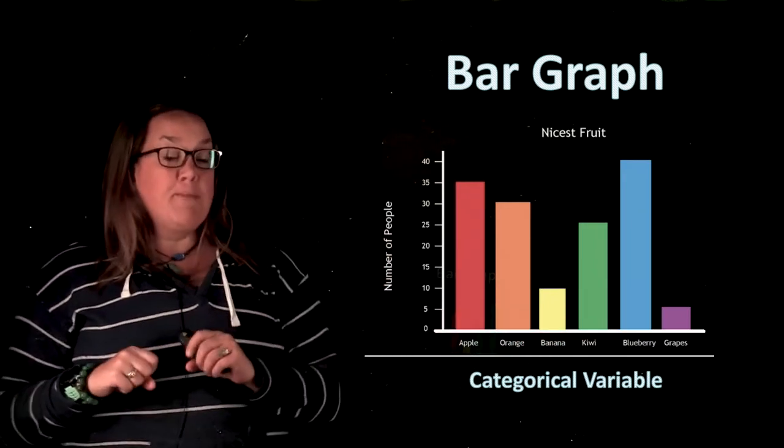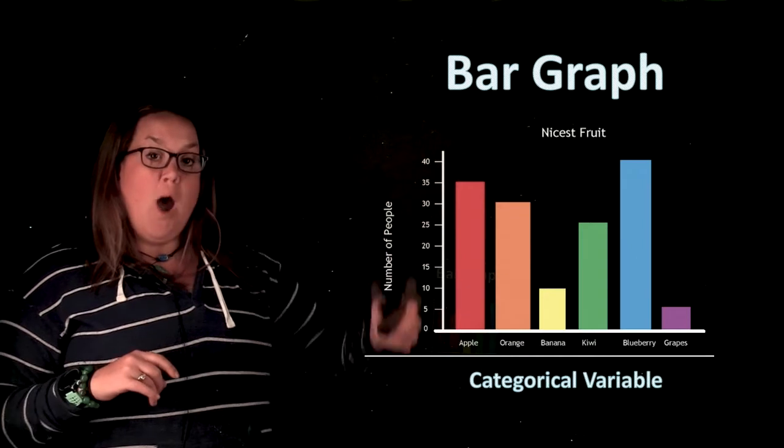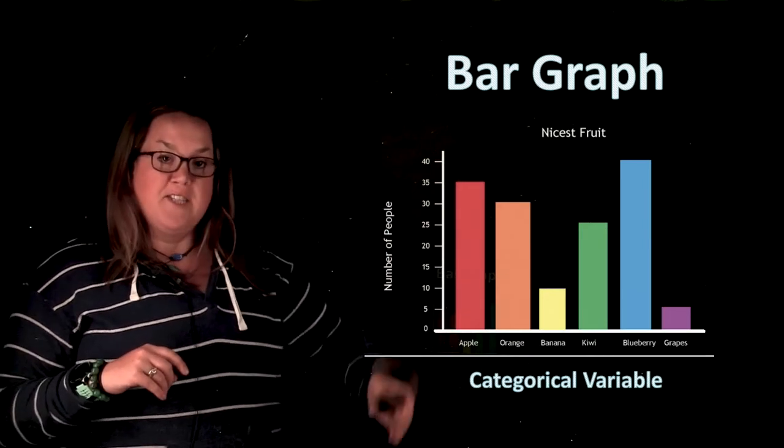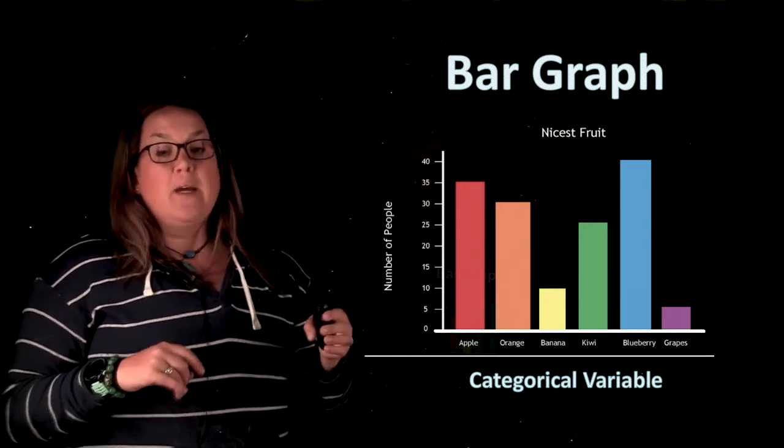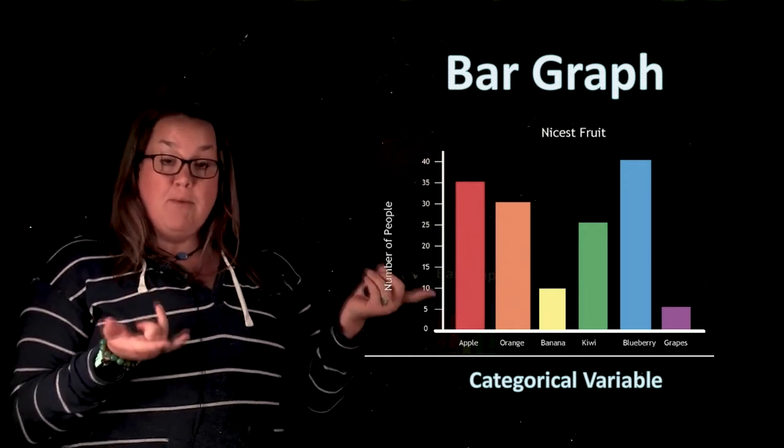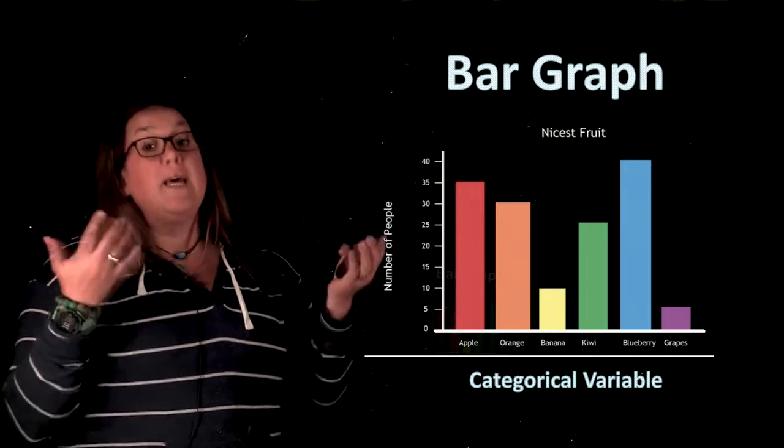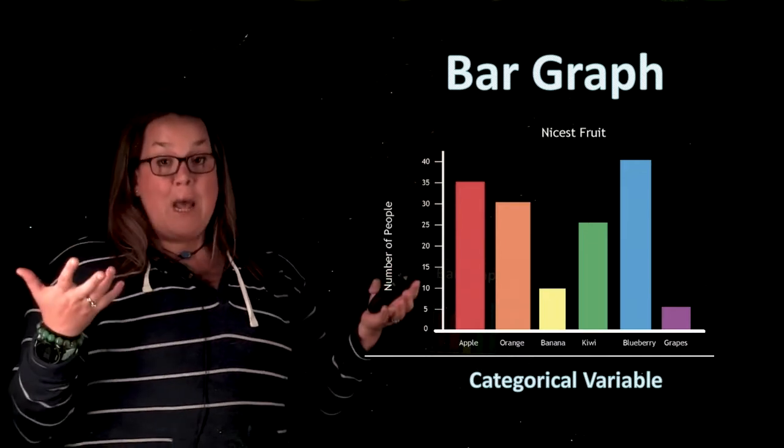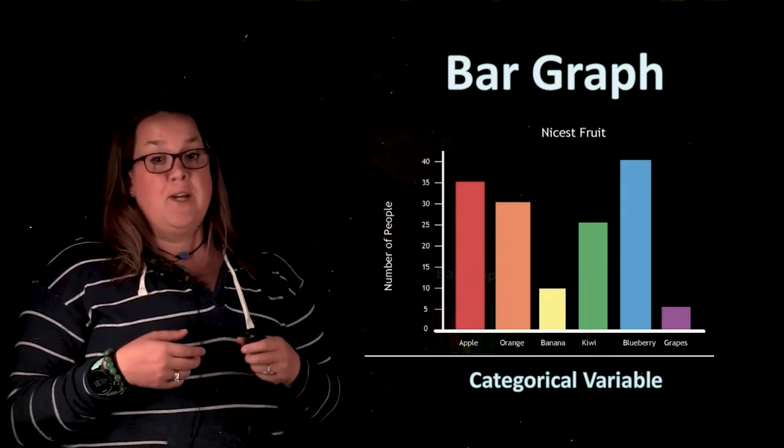Now, one of the things about a bar graph is that this y-axis, remember the y-axis is the vertical axis. It can represent frequencies, which remember is the number of individuals. So what's being represented in this bar graph is frequencies or the number of people who chose this as the nicest fruit.